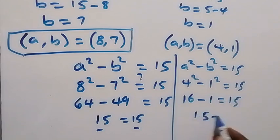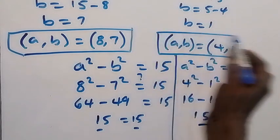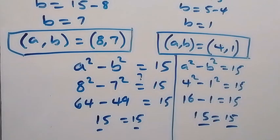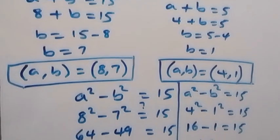16-1 = 15, which equals 15. The left-hand side equals the right-hand side, confirming that (a,b) = (4,1) is also a solution. We have reached the end of this problem. Thank you for watching. Don't forget to subscribe for more videos, turn on the notification bell, and see you in the next class.